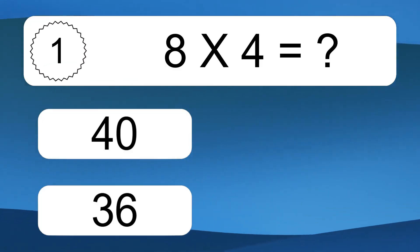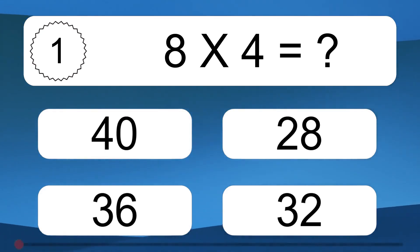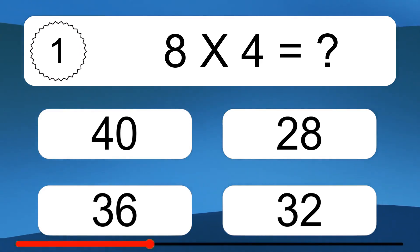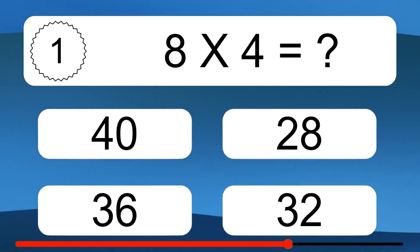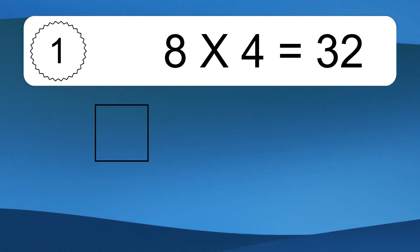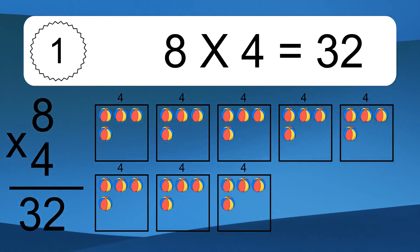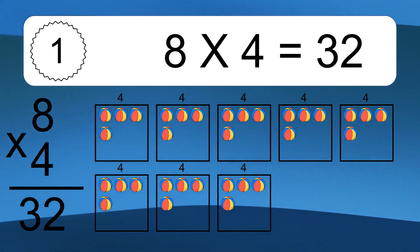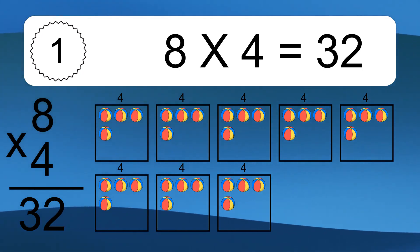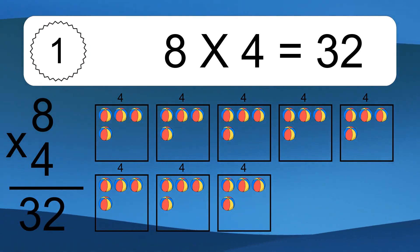8 times 4 equals what? 8 times 4 equals 32. We have 8 boxes, and each box has 4 colorful balls inside. If you count all the balls in all the boxes together, you will have 8 times 4 balls. This equals 32 balls.